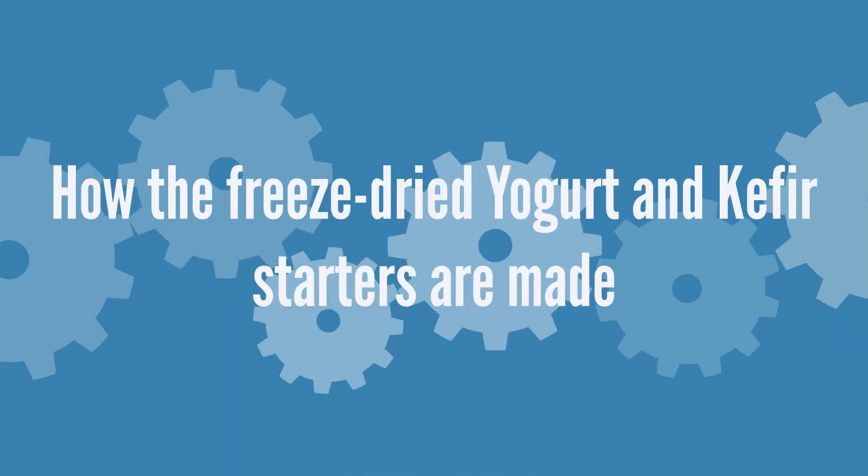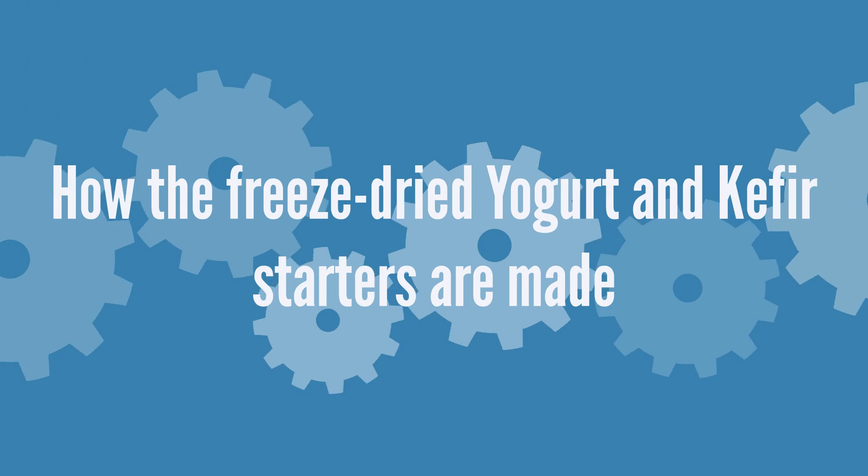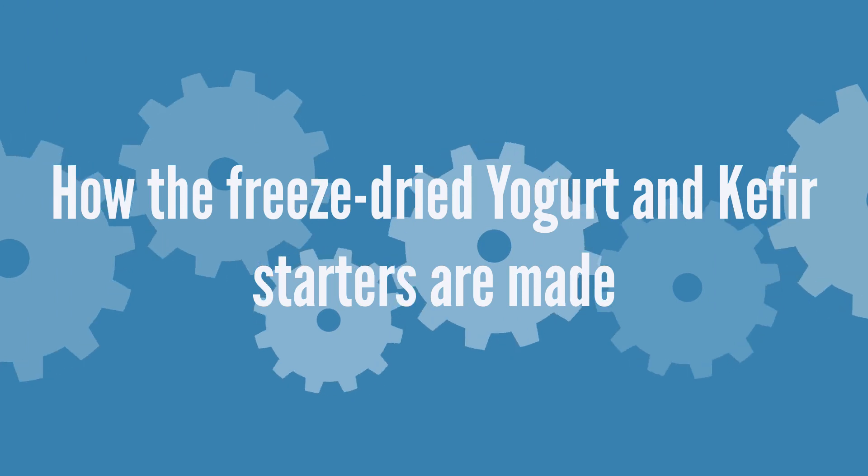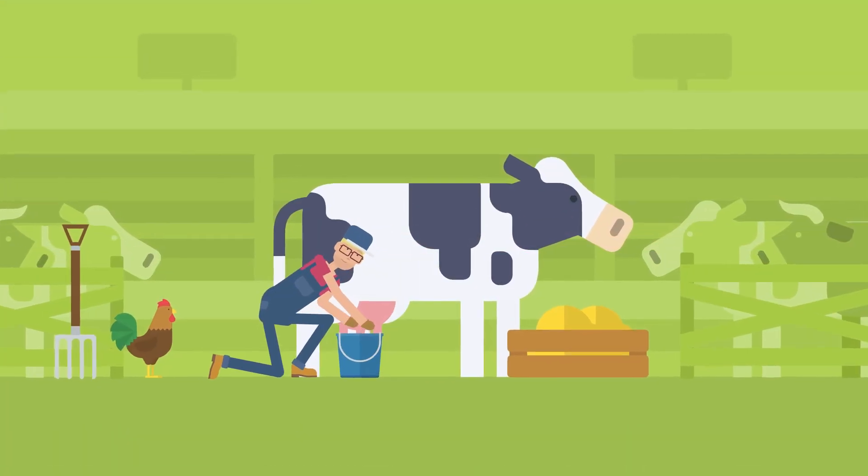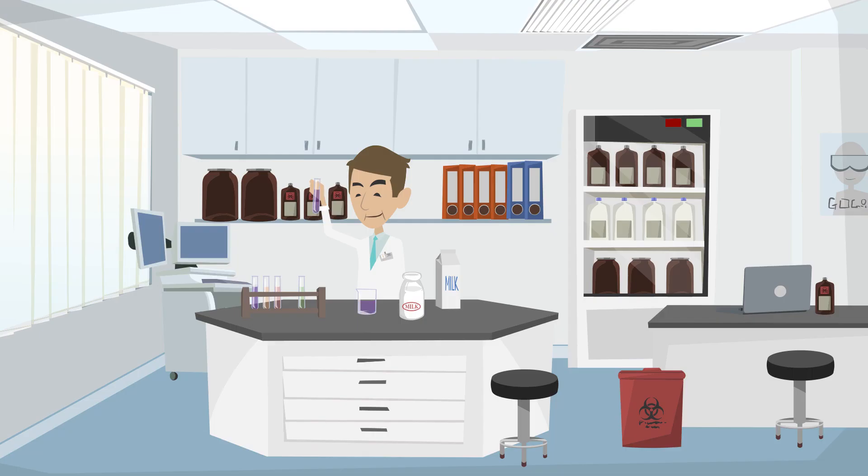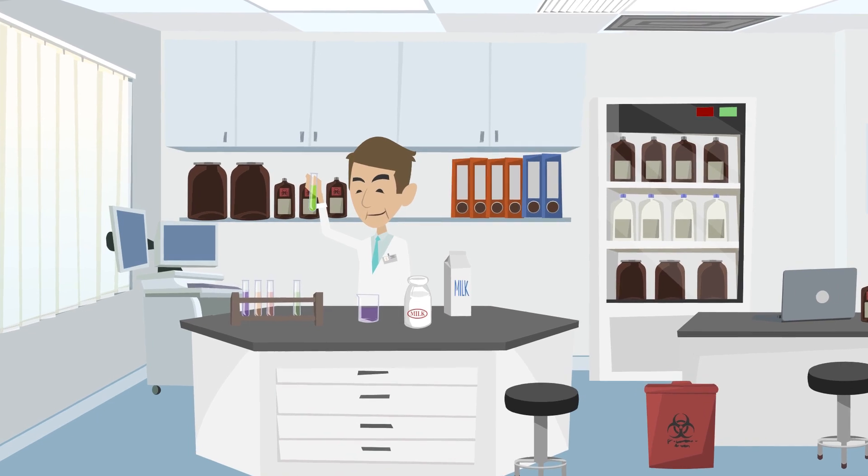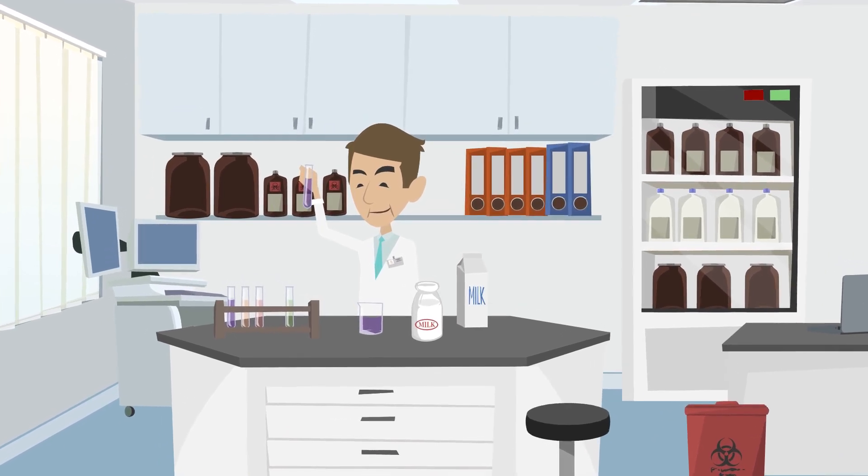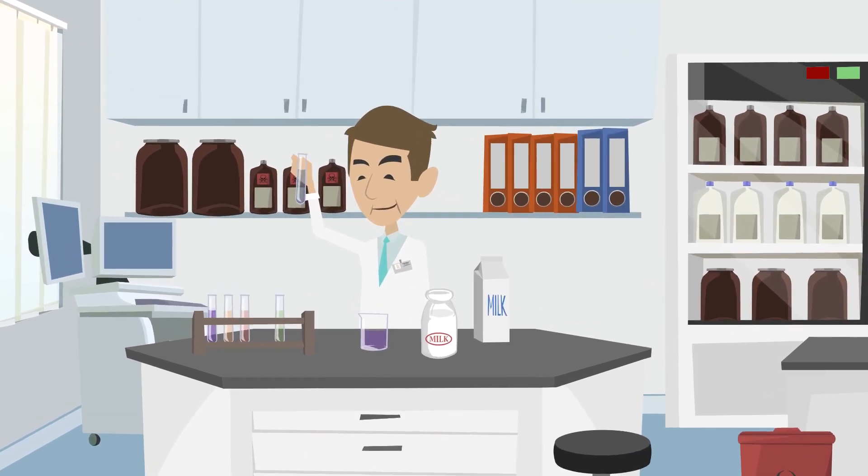So as you know the basics, let's describe how the freeze-dried yogurt and kefir starters are made. Fresh dairy milk from selected farmers is used. The fresh milk goes through preliminary microbiological inspections and standardization of the milk fat content.